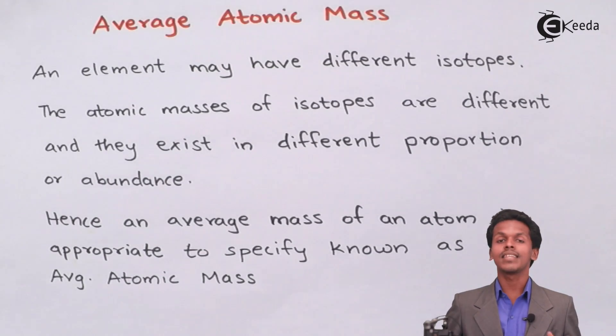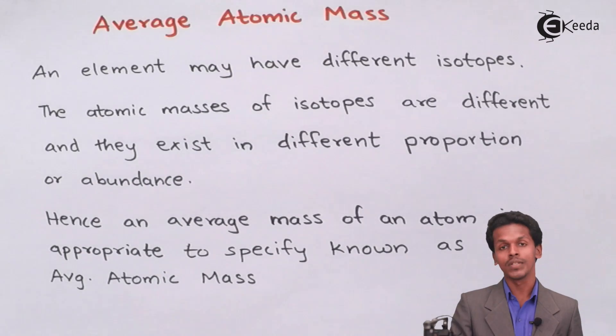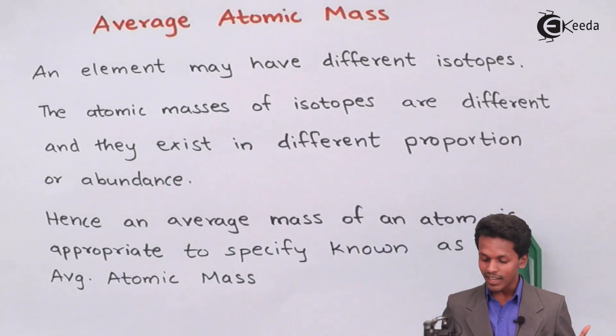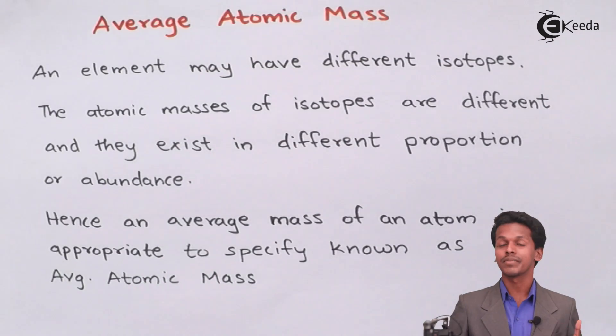As you know, the isotopes may have different atomic mass numbers because of different numbers of neutrons. The atomic mass numbers are different for them, and it is very convenient and essential for us to understand why we take average atomic mass. Hence, an average mass of an atom is appropriate to specify, which is known as average atomic mass.